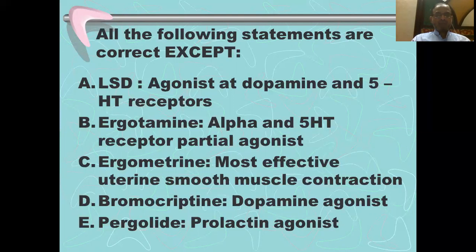So the answer here should be E. As we have mentioned several times, there is an inverse relation between dopamine and prolactin. Drugs that increase dopaminergic activity will cause a decrease in the levels of prolactin. So the answer is E — pergolide is not a prolactin agonist.